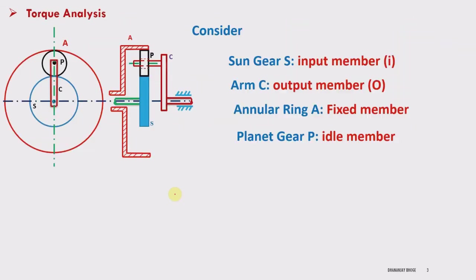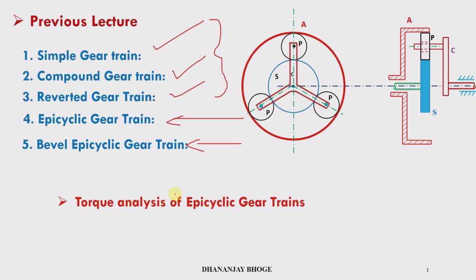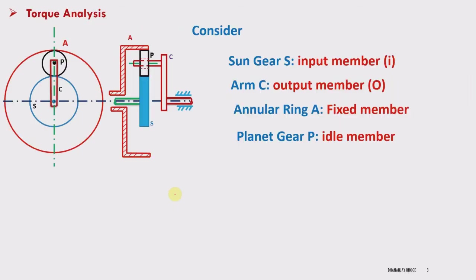In this lecture we will see the torque analysis, because when motion is transmitted, torques are transmitted from one member to another. Consider this gear train as an example — no need to draw the diagram, just refer the previous diagram. Sun gear is S, C is the arm, A is the internal ring, and P is the planet gear.